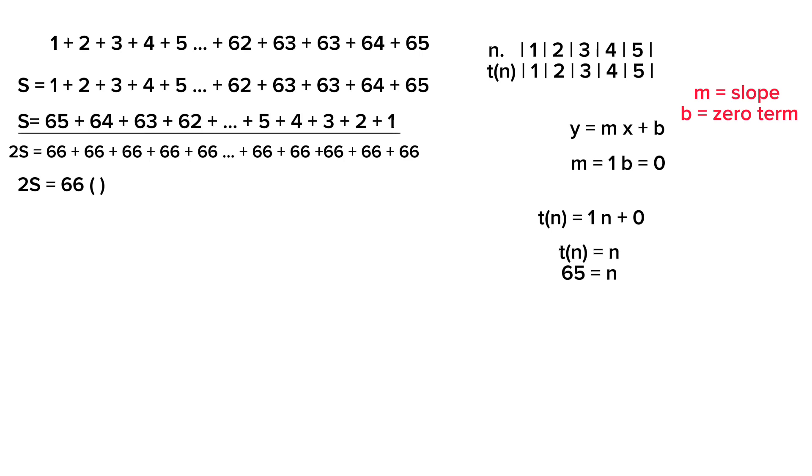So that's what we're gonna put here and multiply. So if we multiply 66 times 65, it's equal to 4,290.